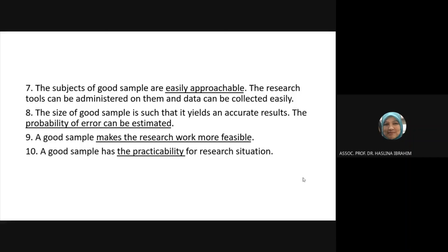For example, studying homosexual practices on campus is not practical because it's very difficult to get someone to admit they practice homosexuality, especially as a student. Even if the student goes to secondary data from a doctor, there are issues of confidentiality — the doctor is not supposed to expose that information. And since the doctor's report is secondary, not primary data, it reduces the credibility of the research.